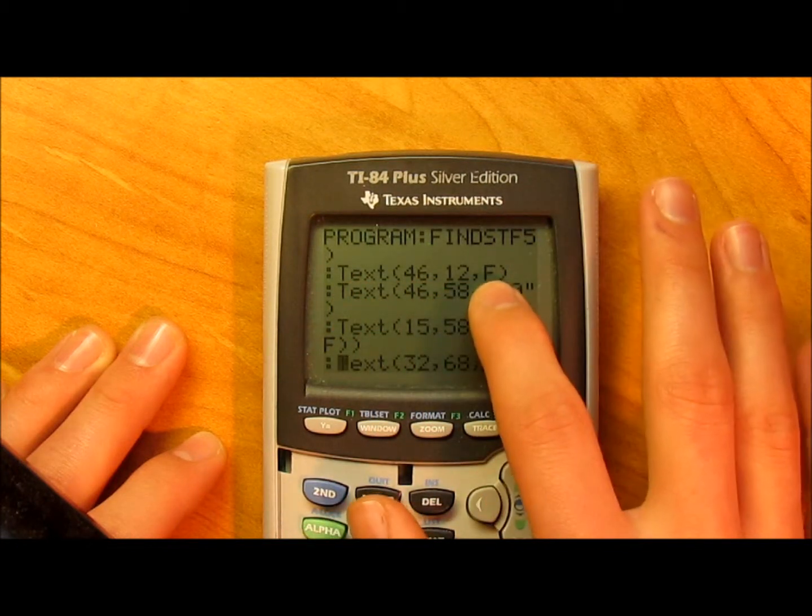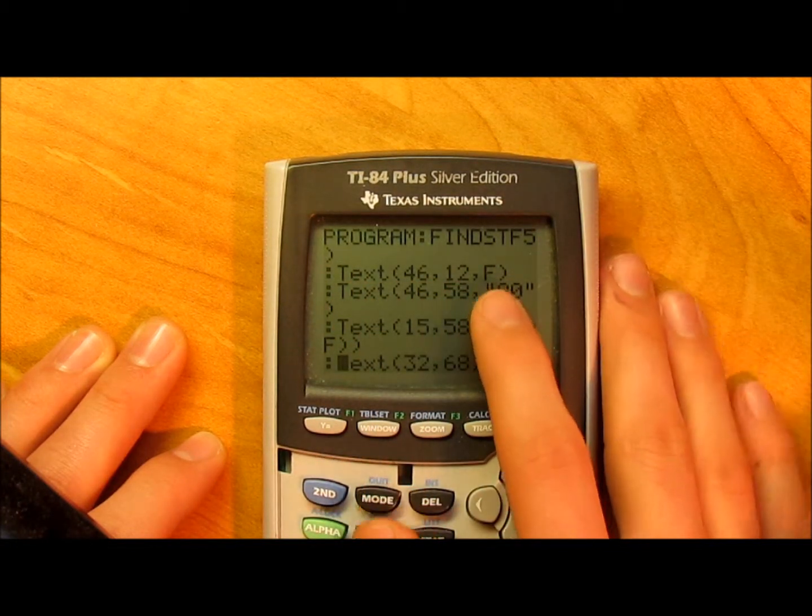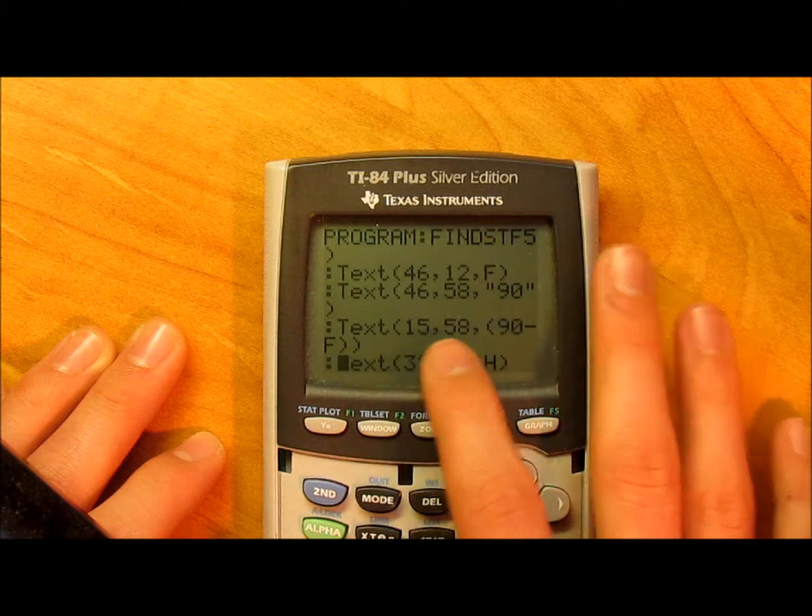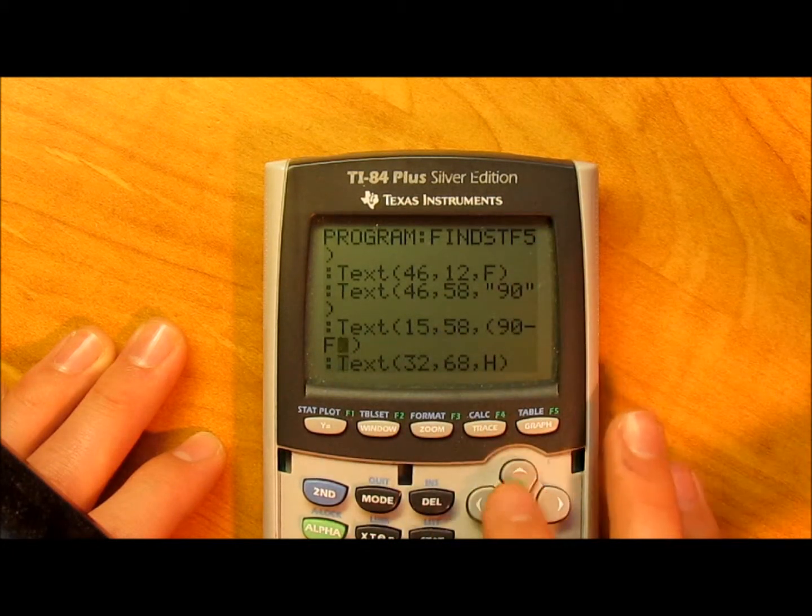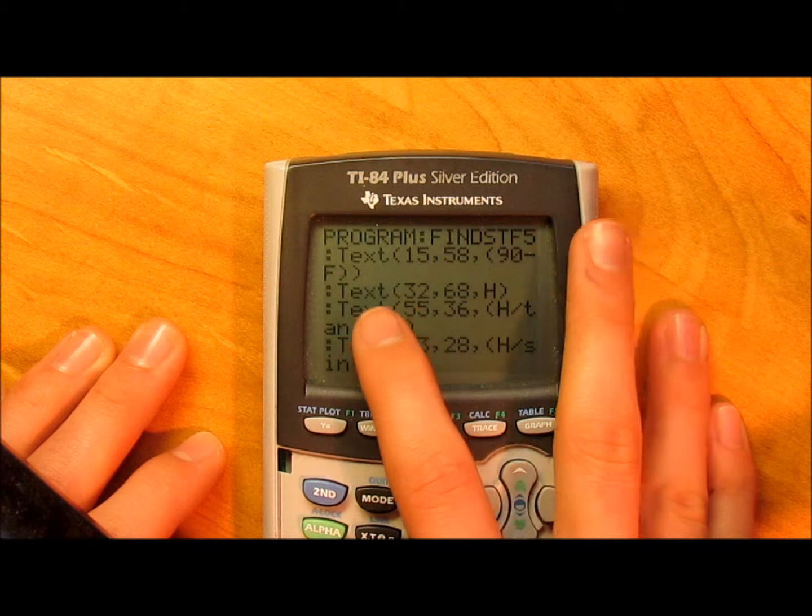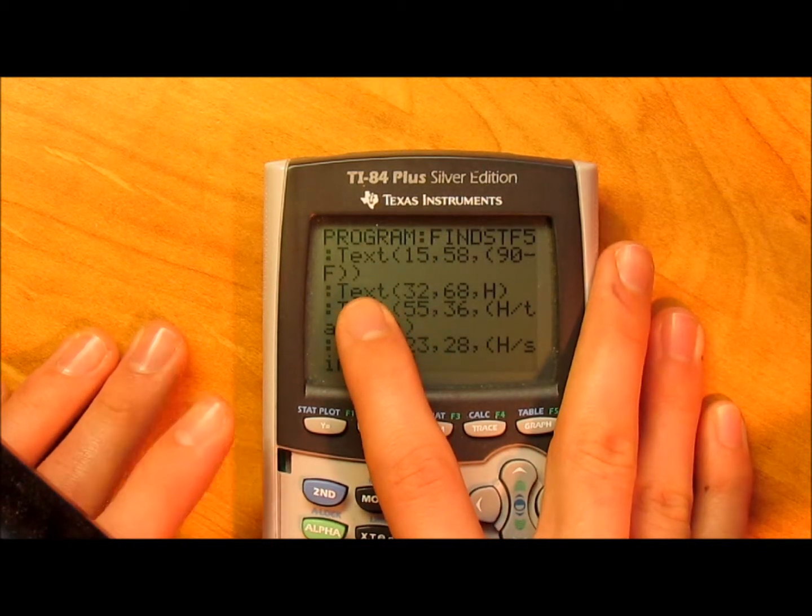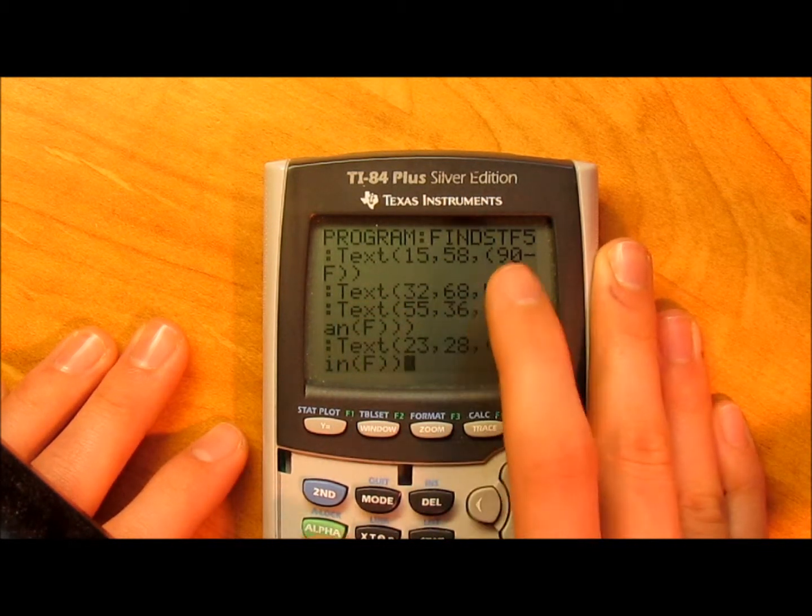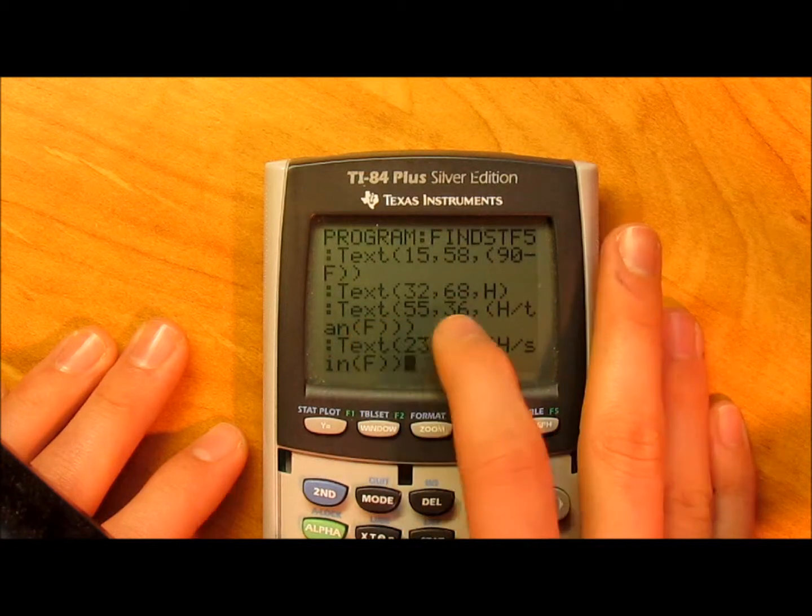This is putting text at that point. So that's the angle you're given, that's 90 degrees, that's right there solving for the third angle that you don't know. Then you have this is the side you're given, this is solving for the other side.